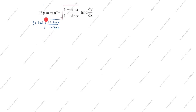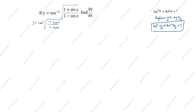How will you split 1 and sine x? We know that cos squared x plus sine squared x is equal to 1. Replacing x by x/2, we get cos squared(x/2) plus sine squared(x/2) is equal to 1. So 1 is equal to cos squared(x/2) plus sine squared(x/2). We will apply this here.